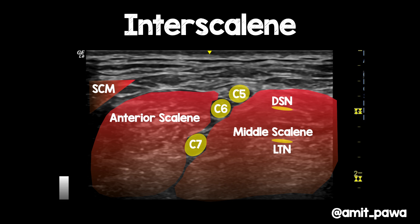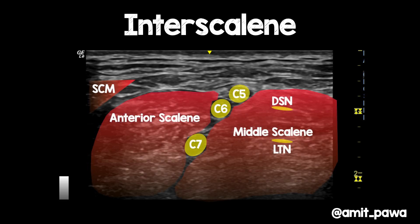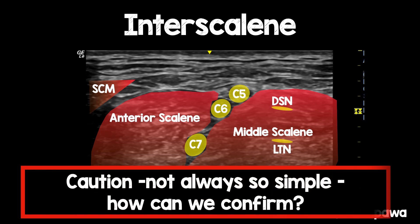If I remove that overlay for a second, you can get a suggestion that there are circular hypoechoic structures here. This second one has got a suggestion of a bifid appearance, which is classical of C6, and then this is C7 down here. But again, if you were to look at a static image of the middle scalene muscle, you wouldn't necessarily highlight these structures as being the long thoracic and the dorsal scapular nerve. There are some anatomical variations to be aware of.